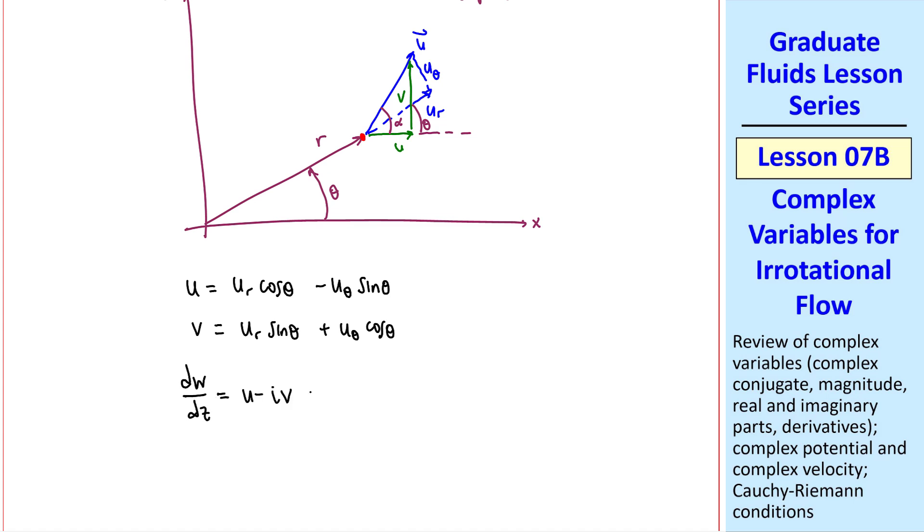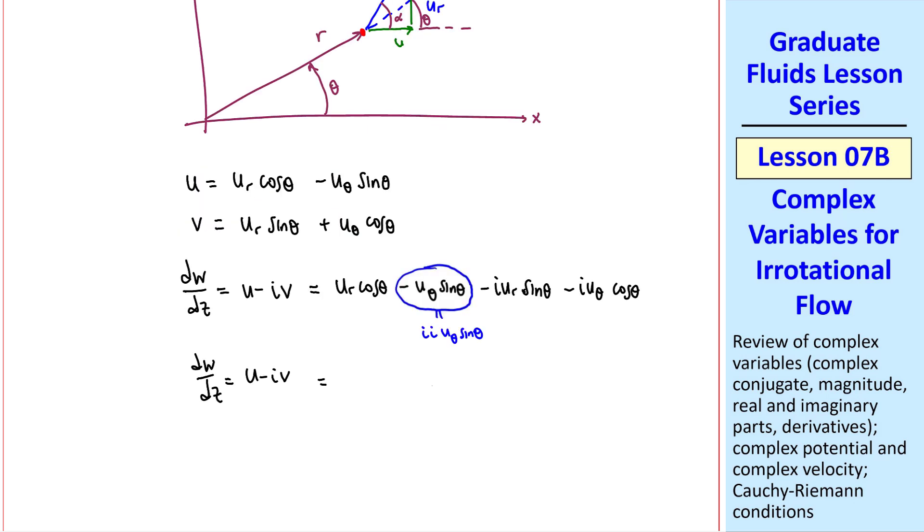Then the complex velocity, u minus iv, can be written out from these two expressions. A little trick here is to write this as ii u theta sine theta. Collecting all the terms with ur, we have cosine theta from here, minus i sine theta from here.